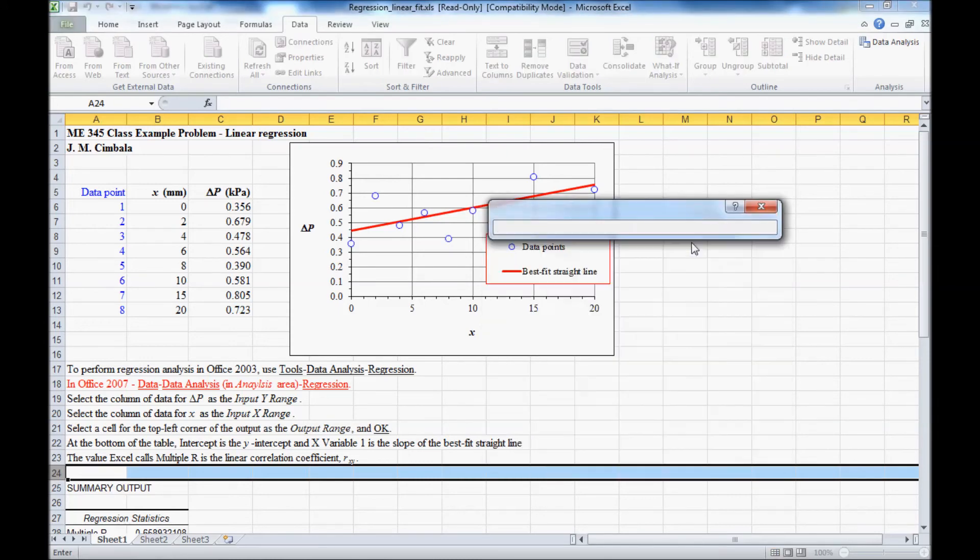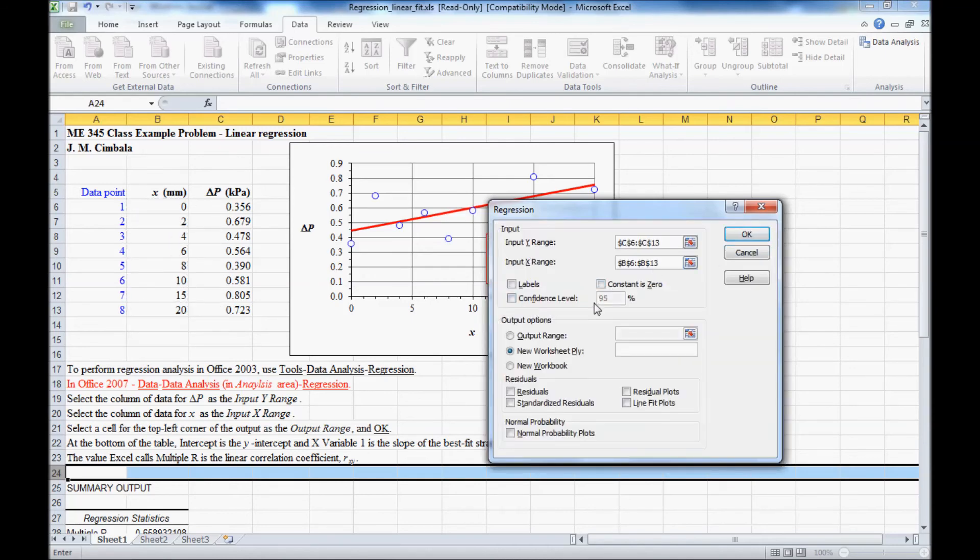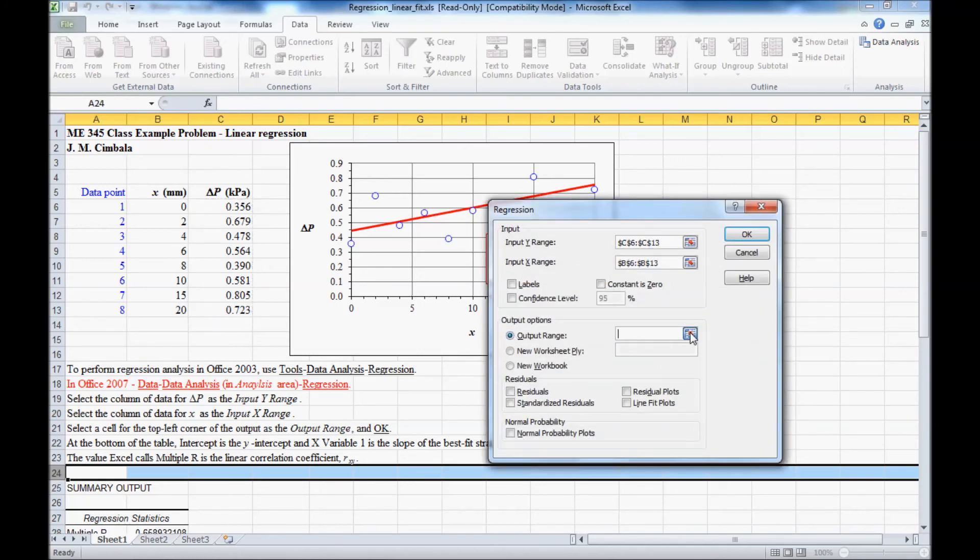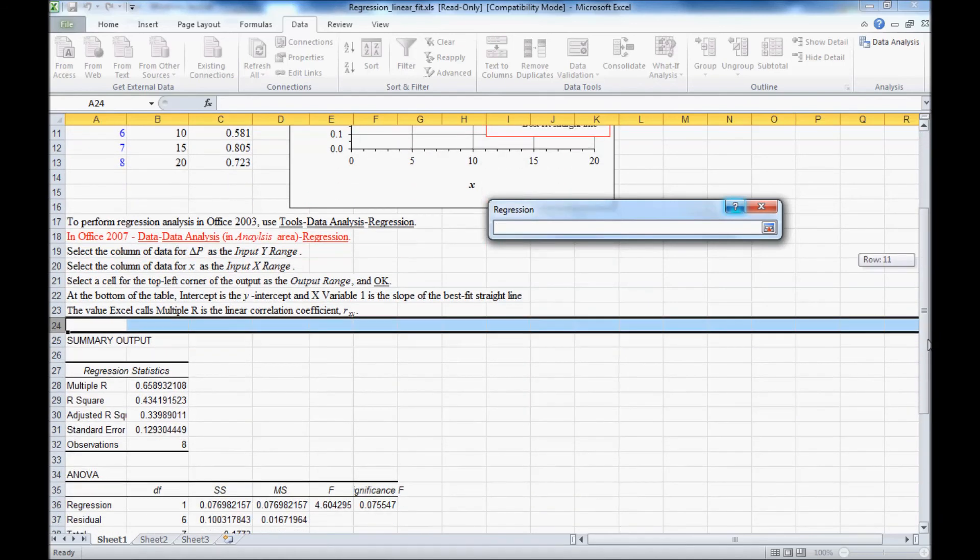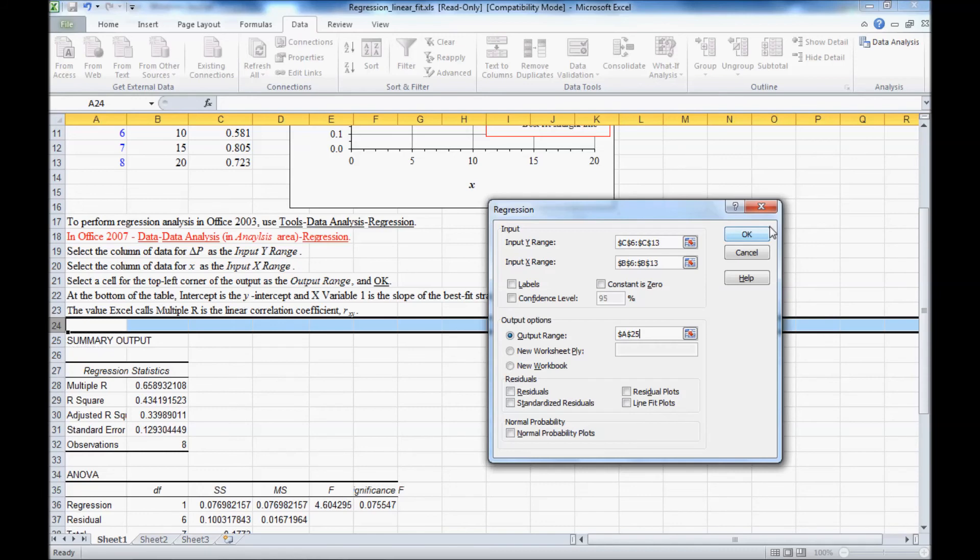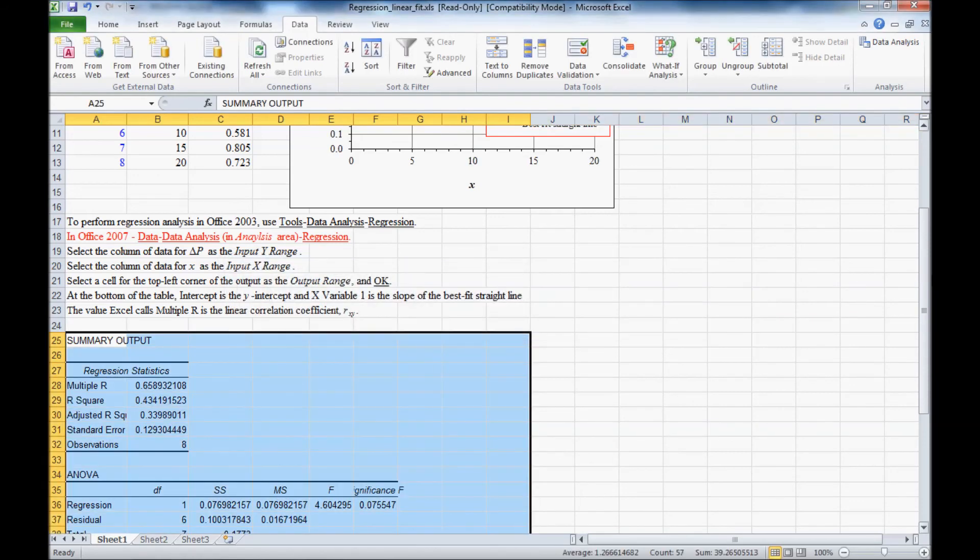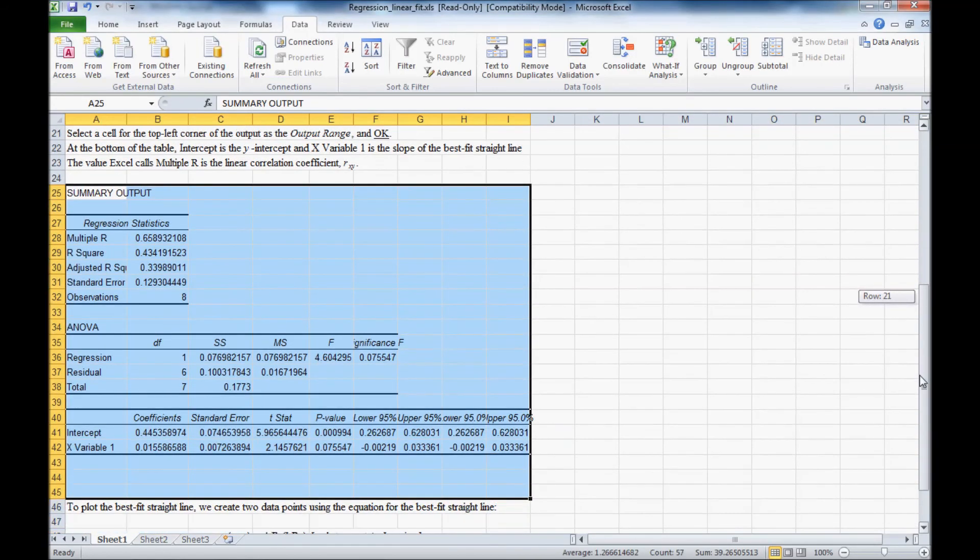And the input Y range is first. The Y range here is the delta P, that's our Y axis. So we pick that. The X range is here. So we pick all those data points. And then we have a 95% confidence level as a default. The output range, I already did this beforehand, but let's put these values in the same place. And that's all we need to do, hit OK. It'll ask me if it's OK to overwrite, which it is, so it just overwrote what I had previously.